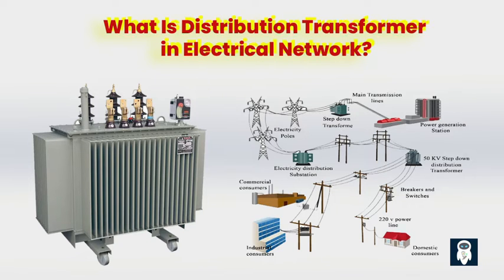The primary function of a distribution transformer is to reduce the voltage from the higher levels present in the transmission lines to a lower level that is safe and compatible with the electrical appliances and devices found in homes and businesses. This voltage reduction is necessary to prevent damage to consumer equipment and ensure the efficient and reliable delivery of electricity.